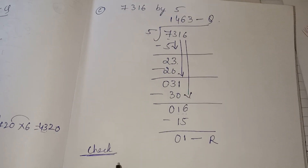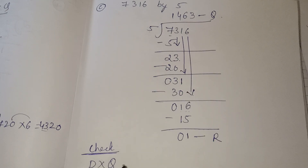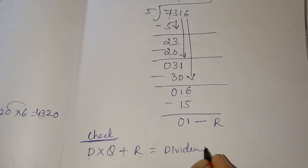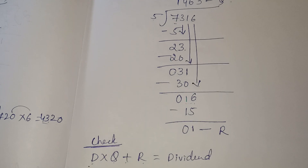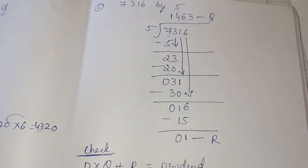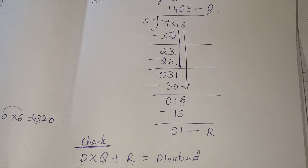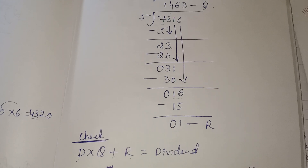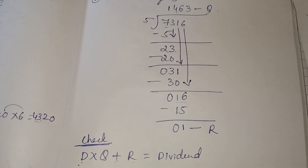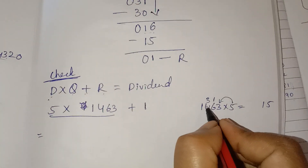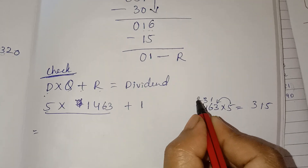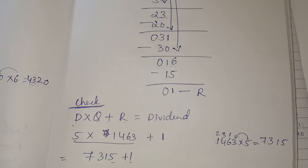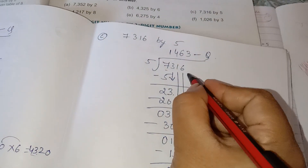Check your answer by the relation: divisor into quotient plus remainder equals dividend. Divisor is 5, quotient is 1463, remainder is 1. Multiply 1463 into 5: 5 threes are 15; 5 sixes are 30 plus 1 is 31; 5 fours are 20 plus 3 is 23; 5 ones are 5 plus 2 is 7. Result: 7315 plus 1 equals 7316 — that is the dividend.